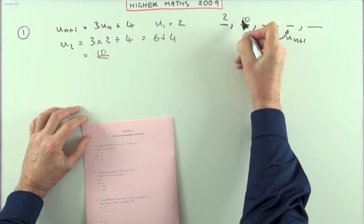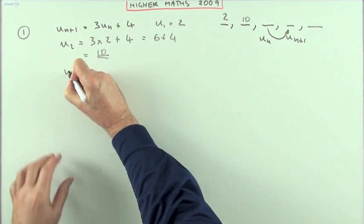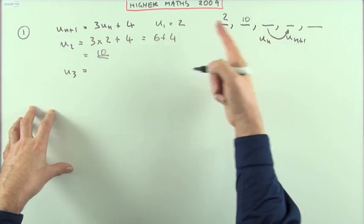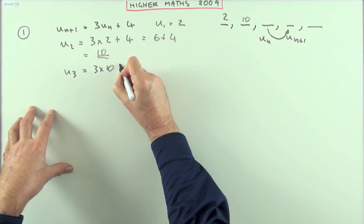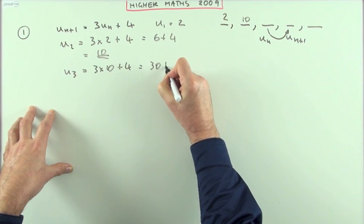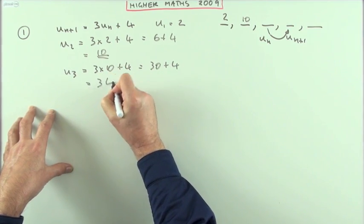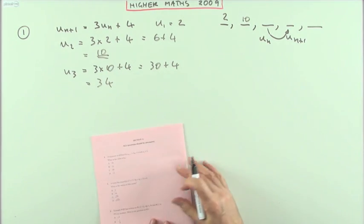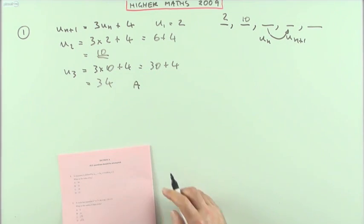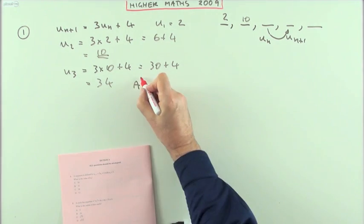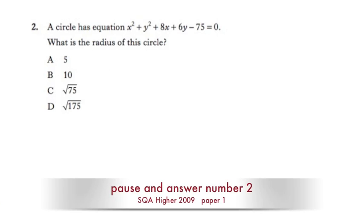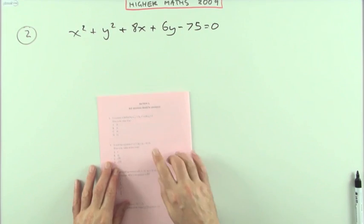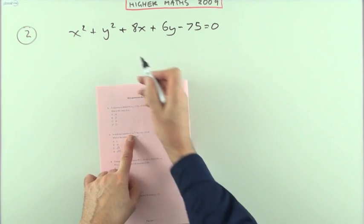So that means the next term was ten. Then to get the third term, it's the same pattern again: three times it and add on four. Three times the ten, add four — that's 30 plus four, which is 34. Looking it up, 34 is answer A.